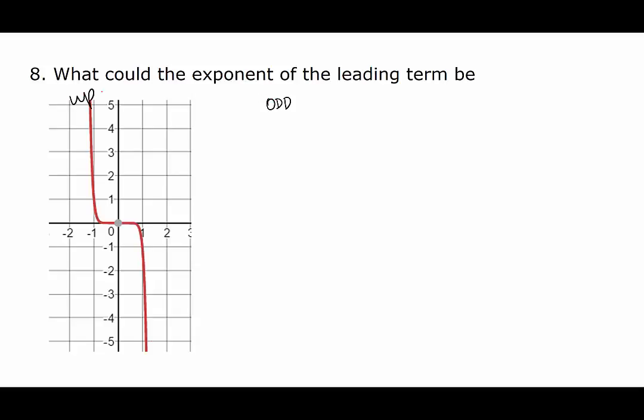Since it starts up and ends down, it will have a negative coefficient. So an example would be negative x cubed, negative x to the fifth, negative x to the seventh.